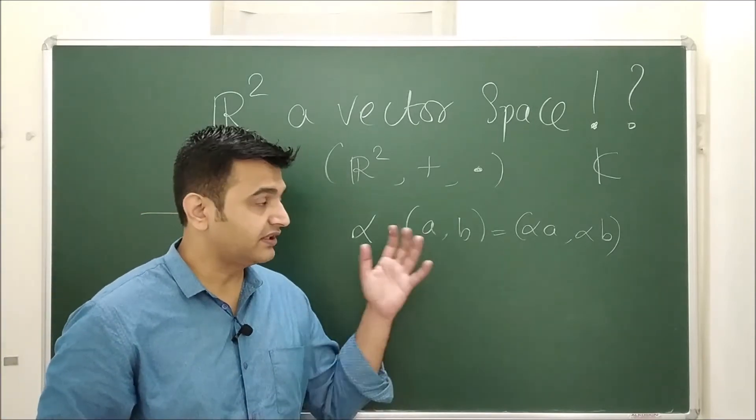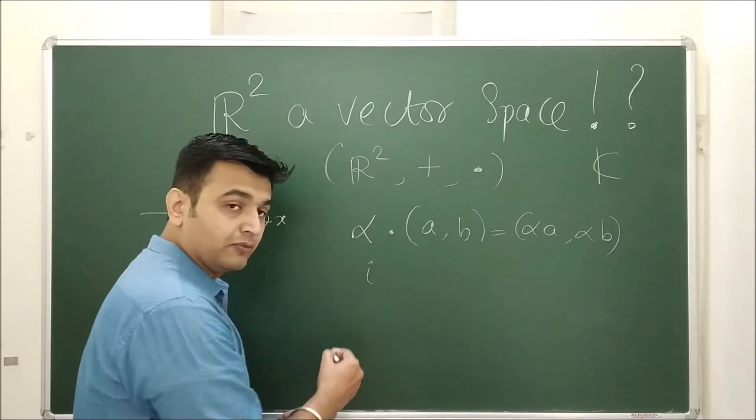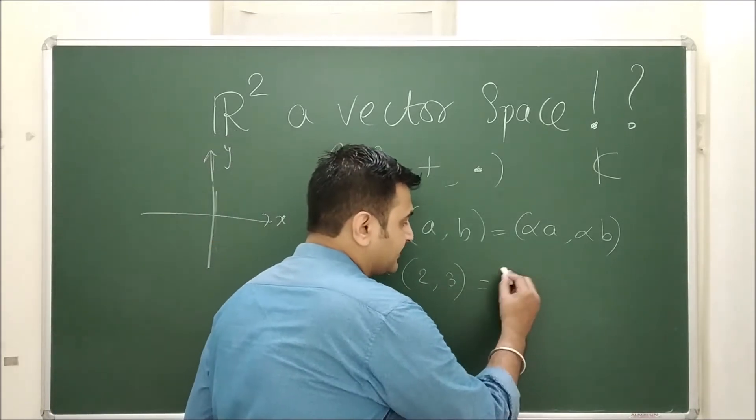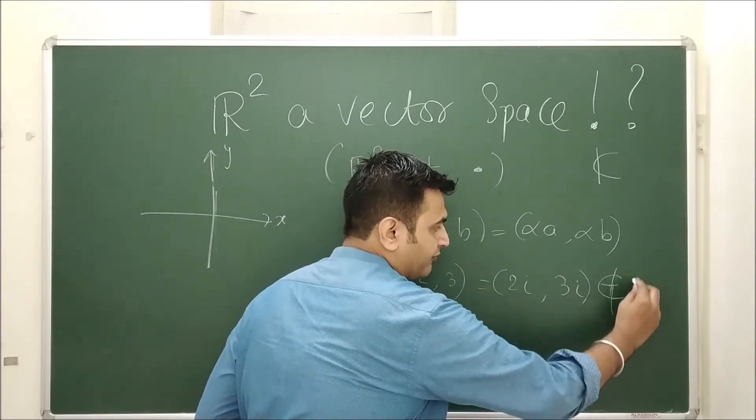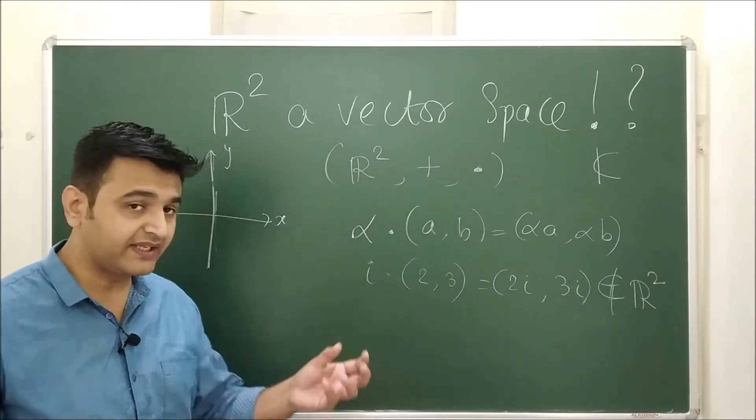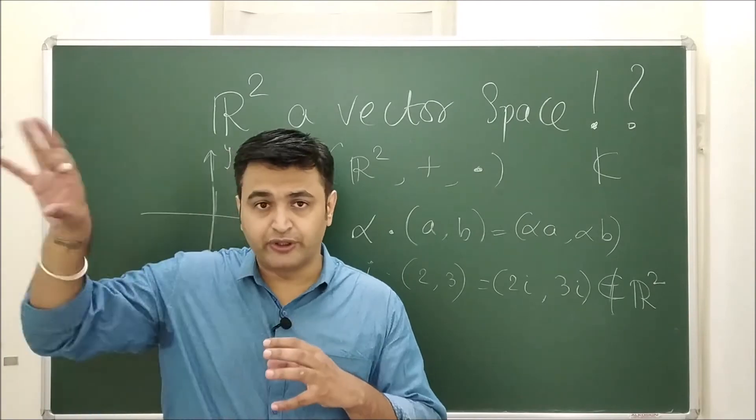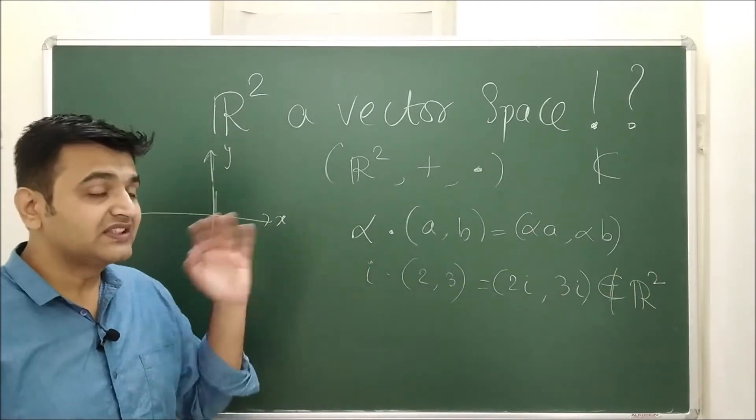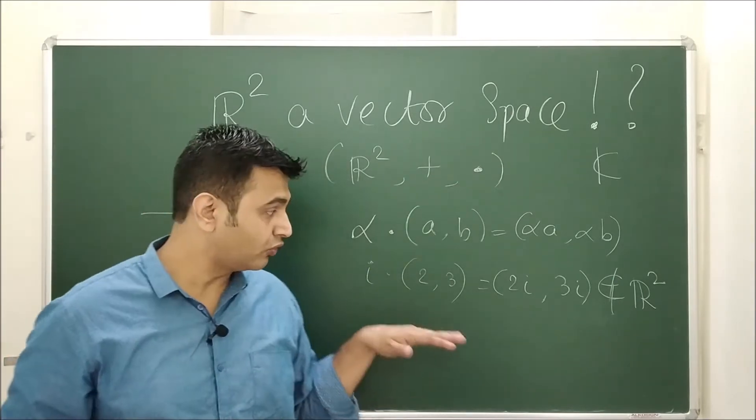This is αA comma αB. This is called as usual or the standard scalar multiplication. Then under this scalar multiplication, it does not form a vector space. Why? Because if I take i, which is a complex number, and if I take (2,3), which is an element of R², the product is nothing but a complex number comma a complex number, which does not belong to R². It belongs to C². So when I am taking a scalar, I am taking a vector, the product is not going to the same set, it is going somewhere else.